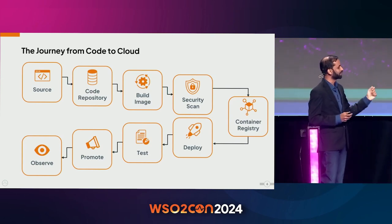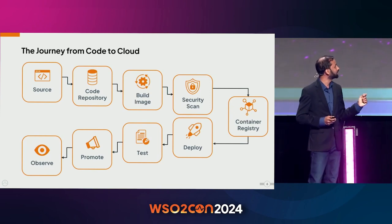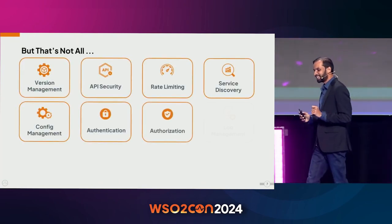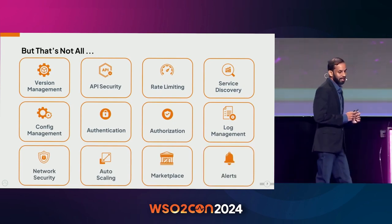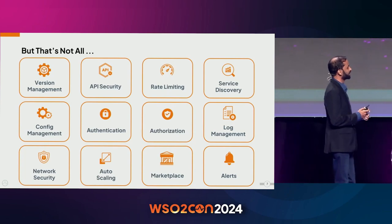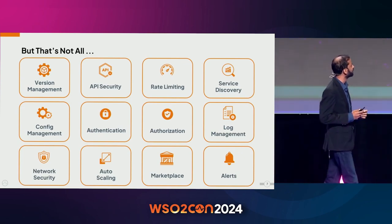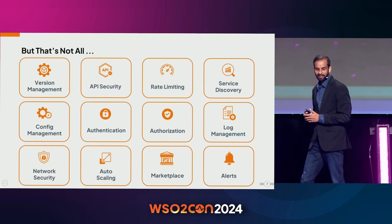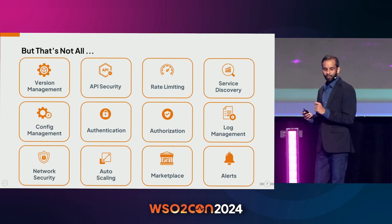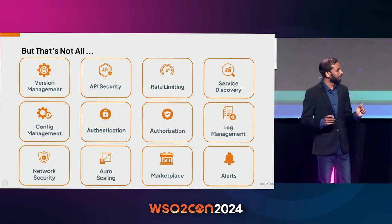Once your code is in production, you start observing it to make sure it's working as expected, not malfunctioning, and if there are bugs or needed improvements, you go through the whole cycle again. However, these are not the only things required to run something in a production-ready manner in the cloud. There's a wide range of capabilities you have to build into your system to run an effective production system. You need a platform that can effectively support these capabilities. Having a solid platform is key.